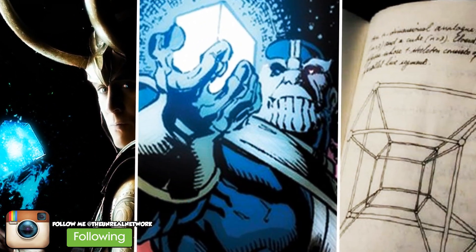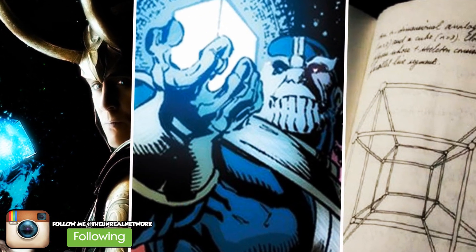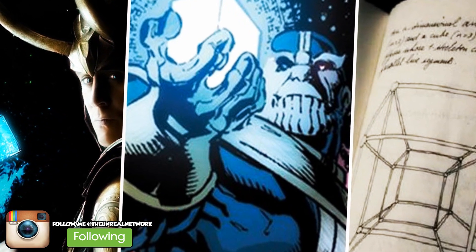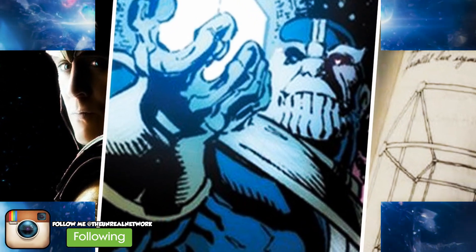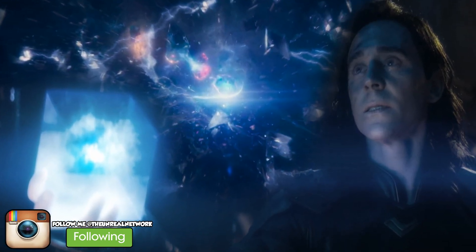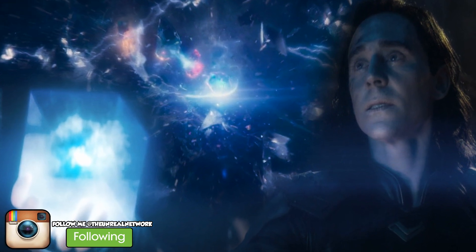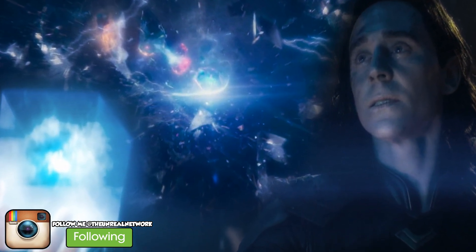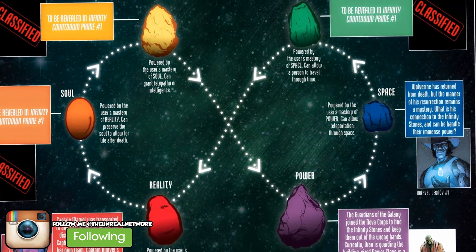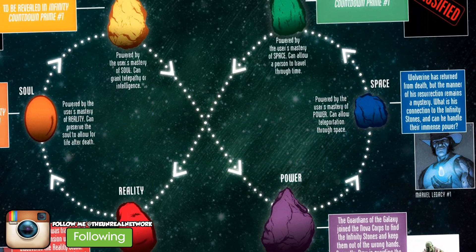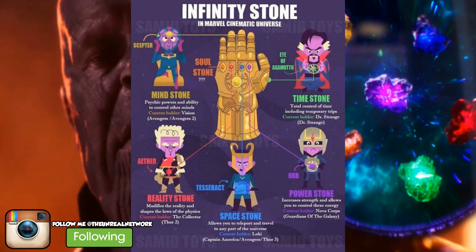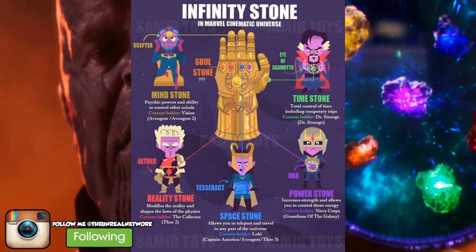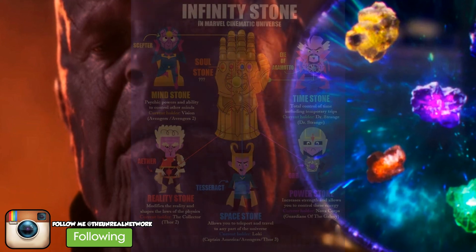When looking at the Space Stone, we see how Thanos used it to his advantage in Avengers: Infinity War by smashing the Tesseract and using the Space Stone for teleportation. The Space Stone gives the user power over space itself — anyone holding it can create a portal from one part of the universe to another and flow through the universe without any effort. In the Marvel films, the Space Stone is hidden within a blue cube called the Tesseract, which Thanos crushed in Avengers: Infinity War to claim it.